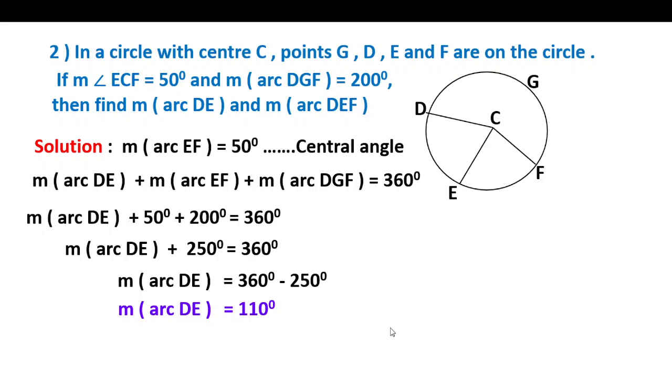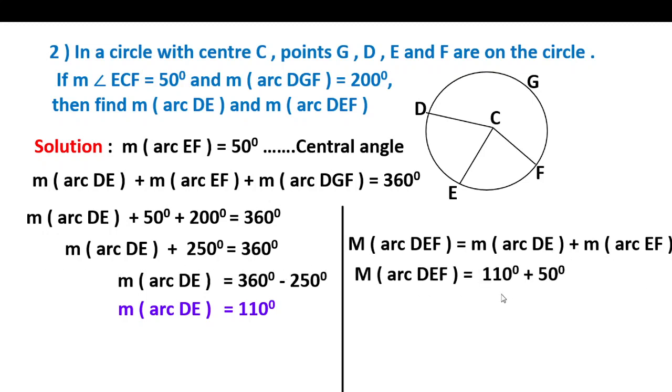Now for arc DEF: measure of arc DEF equals measure of arc DE plus measure of arc EF. Arc DE value is 110 and arc EF value is 50, so their sum is 160 degrees. Measure of arc DEF equals 160 degrees.